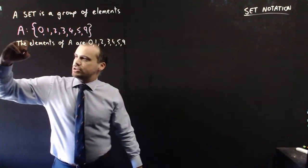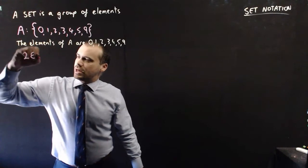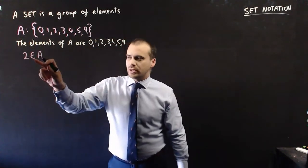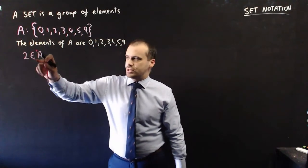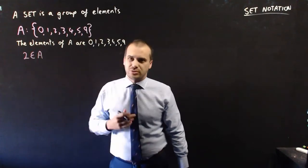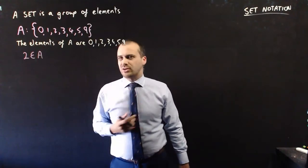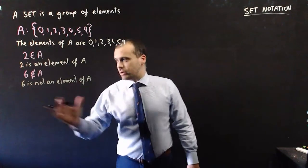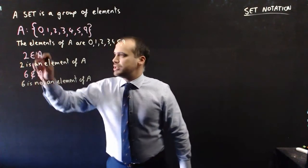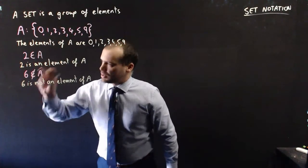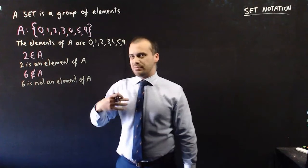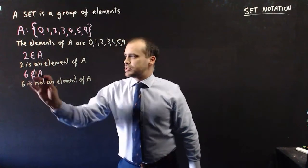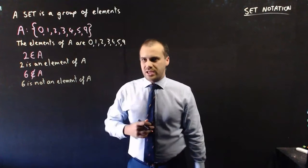New piece of notation: 2 is an element of A. It's this symbol here we're interested in — this sort of backwards 3 looking kind of thing. 2 is an element of A. I've also got this other bit of notation — it's one of those backwards 3s with a line through it, and it means 'not an element.' So, 6 is not an element of A.